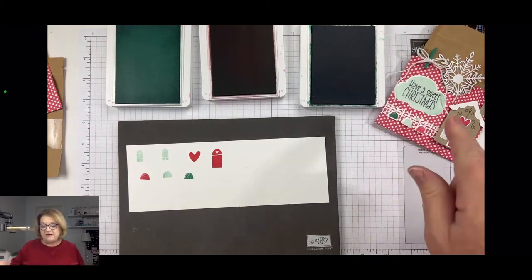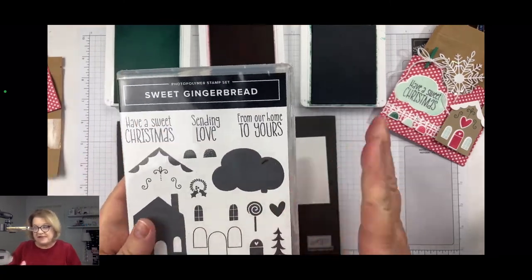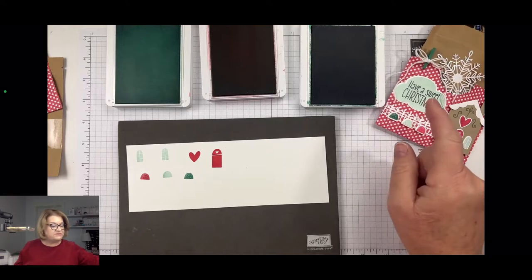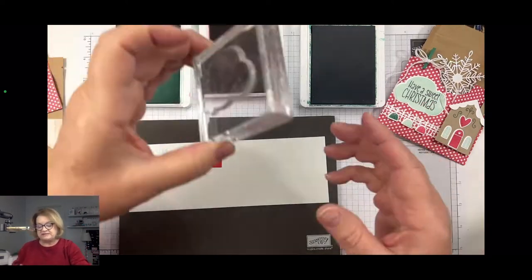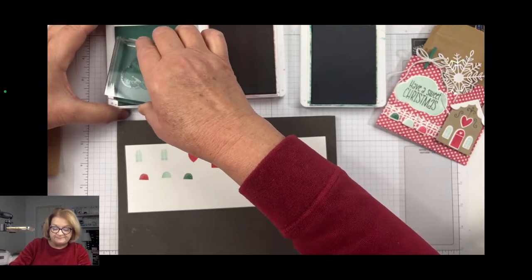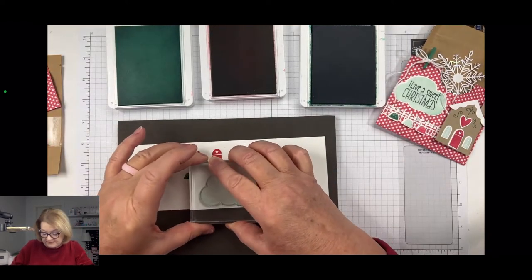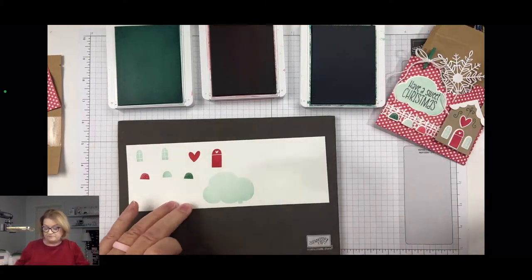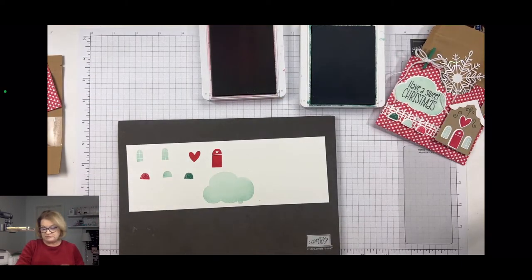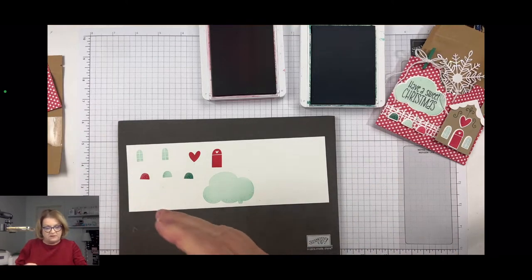Okay, and then we need our little cloud. Now this is actually, the image is actually a word cloud. I think it's supposed to be smoke coming out of the chimney. But I'm using, for my purposes, I'm using it as a cloud. So when I die cut this out, I want to make sure that I trim off that little extra word piece. So I'm going to stamp this in the pool party. And I think we can close this all up. I'm going to leave the shaded spruce out because we're going to embellish our house with a little gingerbread trim here in a minute.